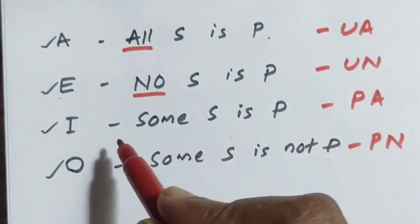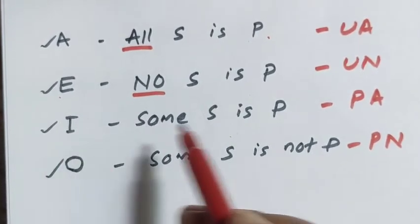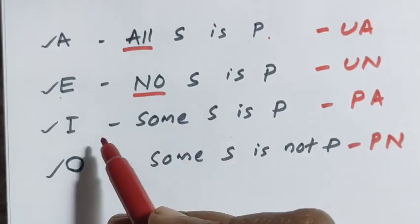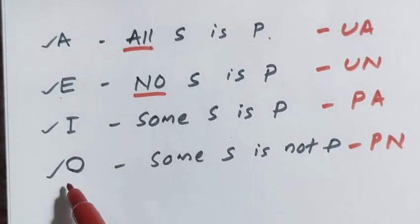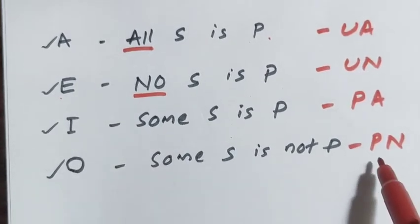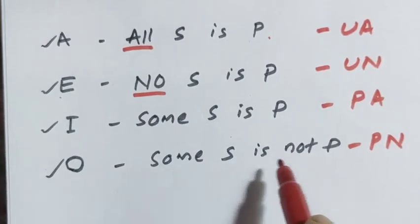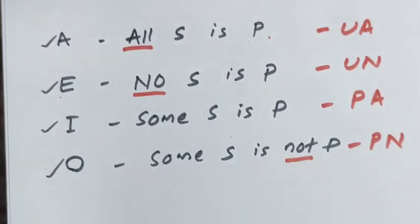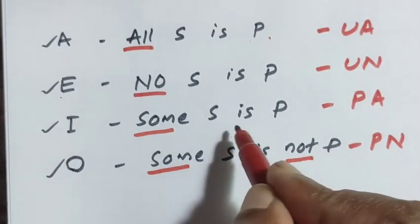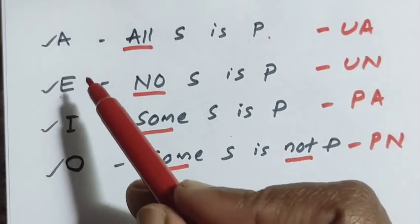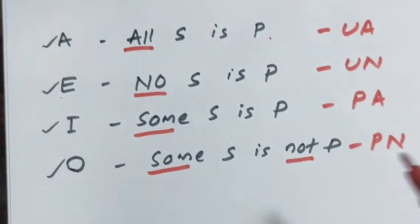For particular propositions we use 'some', and for negative we use 'not'. The structure of I proposition is 'Some S is P', and the structure of O proposition is 'Some S is not P', where 'not' makes it negative and 'some' makes it particular. So A, E, I, O are the four types of proposition according to quality and quantity.